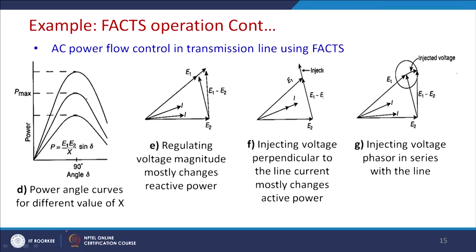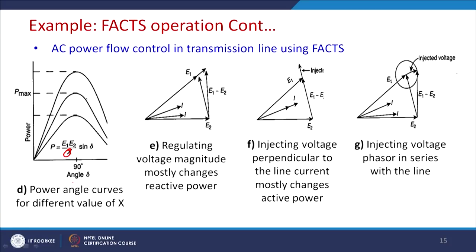If we change the value of x, we can effectively operate these lines in parallel. Increasing or decreasing the value of x changes the maximum power handling capability of the line. However, if we increase power beyond a point it may touch the thermal limit — since the voltage between points A and B is the same, what we are essentially changing is the current flowing through the line. Therefore we must dynamically consider the thermal limit when changing power.